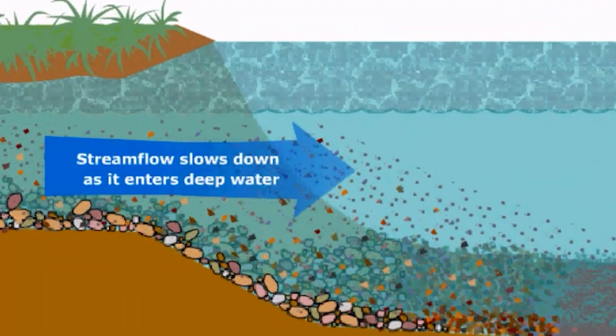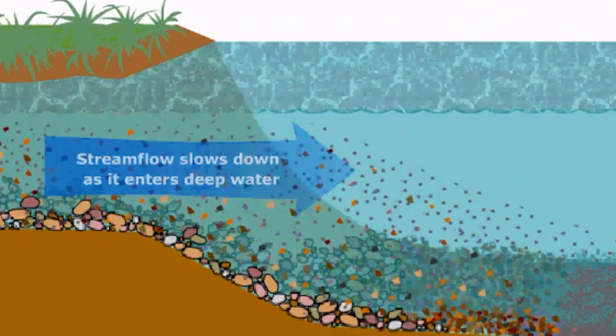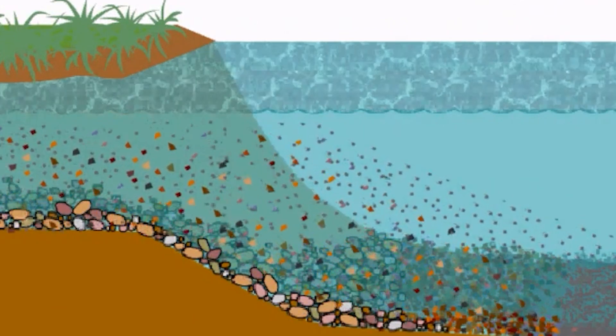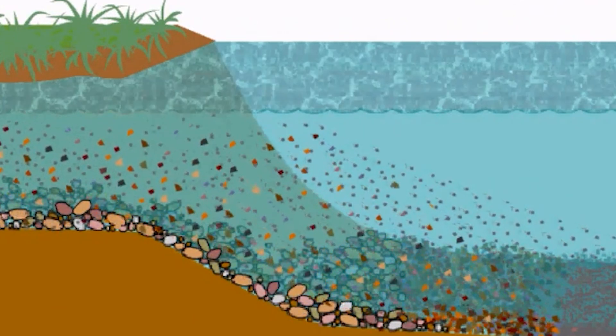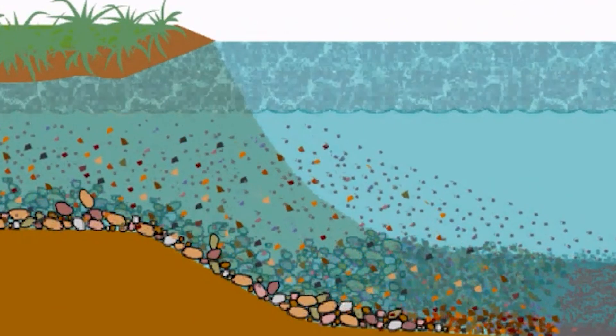Picture a river flowing down a mountain. It carries sediment, but as it slows down at a lake or the ocean, the sediment sinks to the bottom, creating a layer.